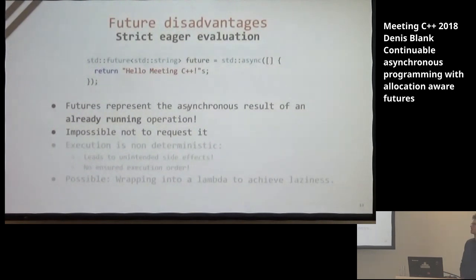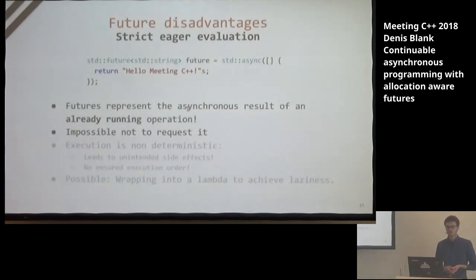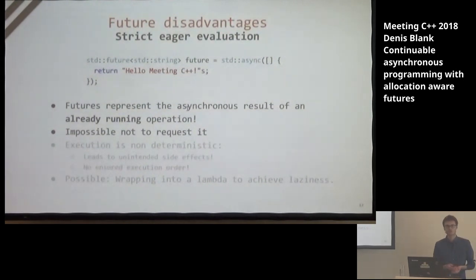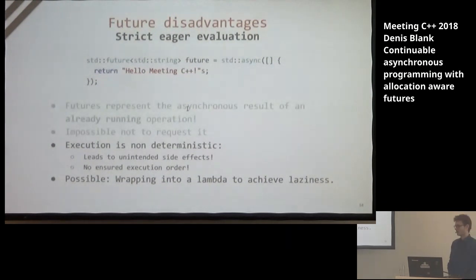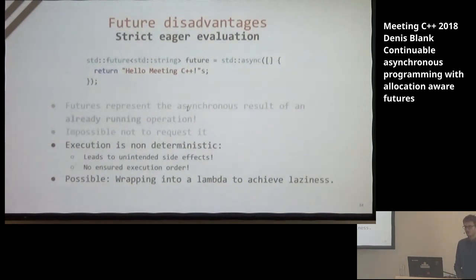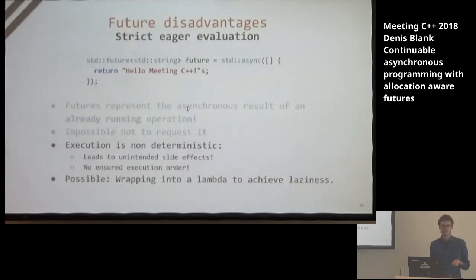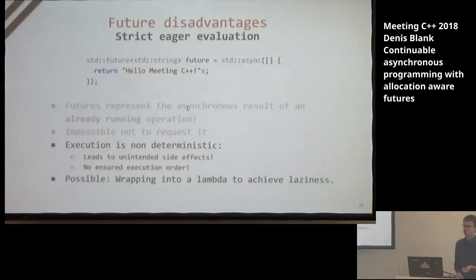Another disadvantage of the future is its eager evaluation semantics, which means futures represent the result of an already running task — you can't stop it and it's impossible not to request it. If you see you don't need the result anymore, the future is already running; you can't stop it except by implementing some manual cancellation mechanism. Its execution is non-deterministic, which could lead to unintended side effects. The naive approach would be to wrap the callback into a lambda to achieve laziness, but that produces code overhead and doesn't look nice.